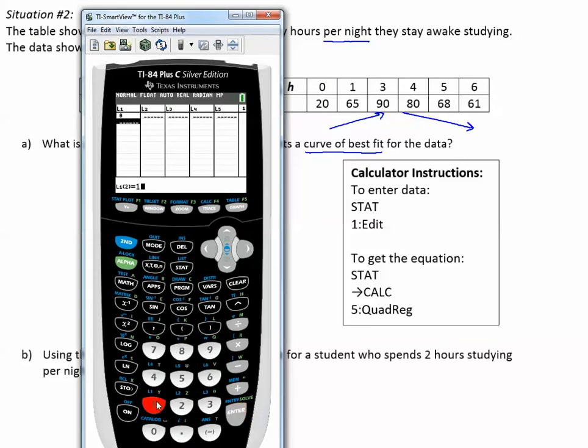Then I'm going to enter in the top for list one and the bottom for list two. 0, 1, enter, 3, enter, 4, enter, 5, enter, 6, enter. Go over to enter the test scores, 20, enter, 65, 90, 80, 68, and 61.